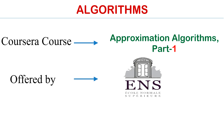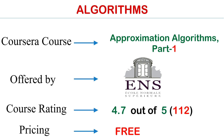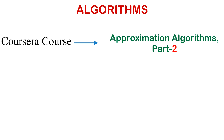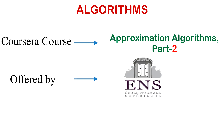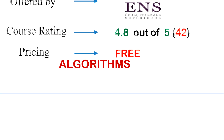Course number seven is Approximation Algorithms Part One, offered by ENS University. The rating of this course is 4.7 out of 5 and the price is absolutely free. Course number eight is Approximation Algorithms Part Two, also offered by ENS University. The rating is 4.8 out of 5 and the price is also free.